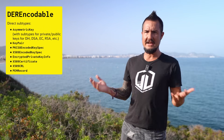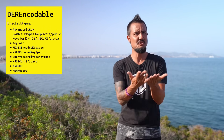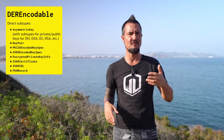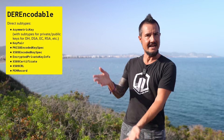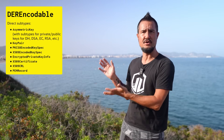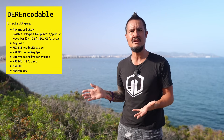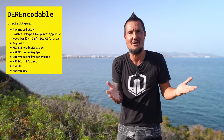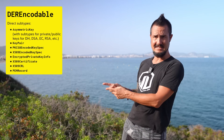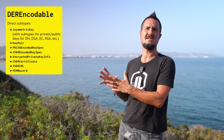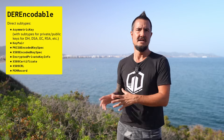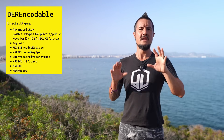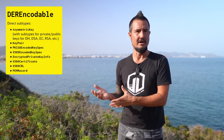First, what types are actually DEREncodable? I could read out the list, but that quickly turns into word salad, so you'll have to glance at the screen for a moment to satisfy your curiosity. The last class on that list, PEMRecord, is new. It captures the PEM texts of cryptographic objects that the JDK doesn't have a type for, such as PKCS#10 certificate requests, thus enabling you to process them as well.